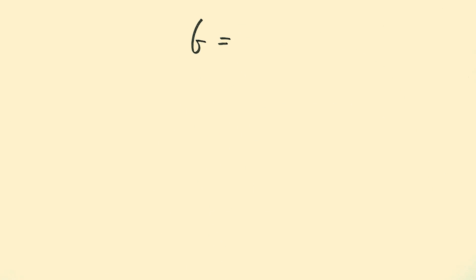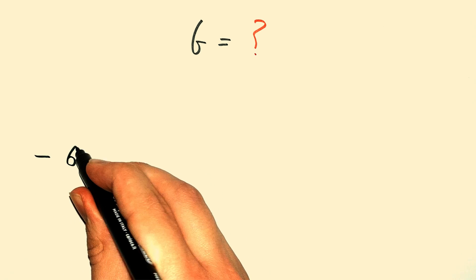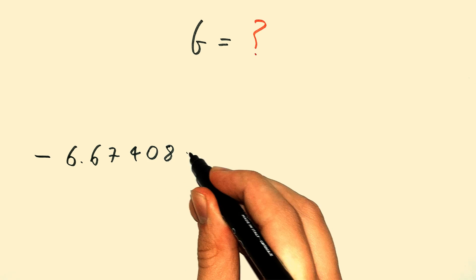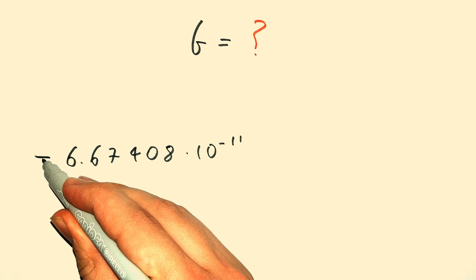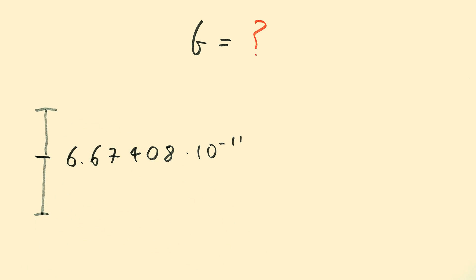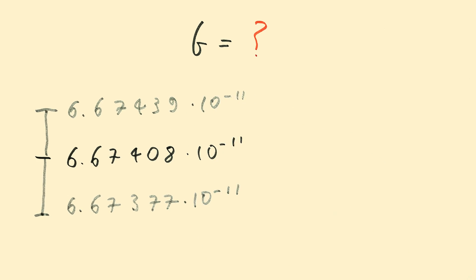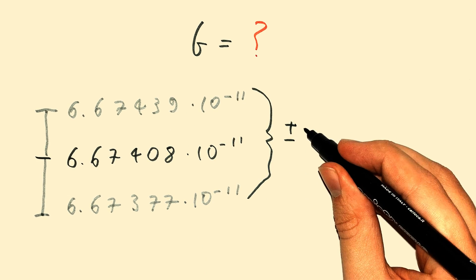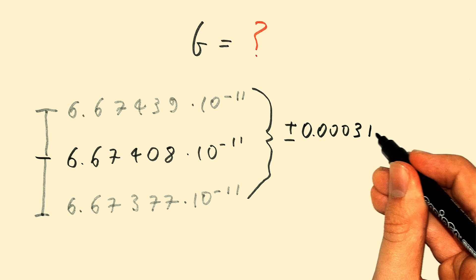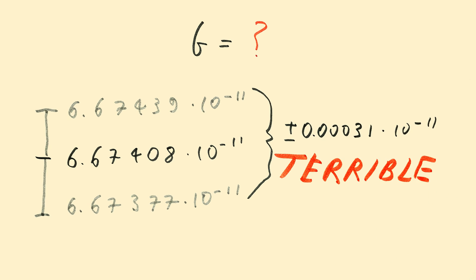So how do we know G's value? It seems like it's a significant number. Previously, I said that G's value is 6.7408 x 10^-11. But the truth is, that's the average of the upper and lower limit. We don't actually know G's value with full precision. It's somewhere between 6.67377 x 10^-11 and 6.67439 x 10^-11. That means it has an uncertainty of 0.00031 x 10^-11, which is terrible.